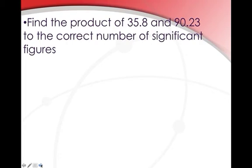Now we'll move on to the third one: how many significant figures are in this number? We use rule four — there are two significant figures, as all the other zeros are simply holding the seven and six in the correct place. One could also write this using scientific notation as 7.6 times 10 to negative 4. So there are two significant figures in that number. Now: find the product of 35.8 and 90.23 to the correct number of significant figures. For multiplication and division we use rule five — the least precise value is 35.8, which has three significant figures.